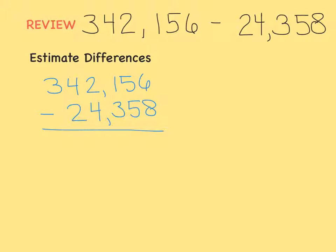When we estimate, the first thing we do is we round both numbers to the greatest place they have in common. The greatest place I see is the hundred thousandths place, but the number below does not have a digit in the hundred thousandths place. So let's look at the next one. They both have a digit in the ten thousandths place, so that is what we'll round to on both numbers.